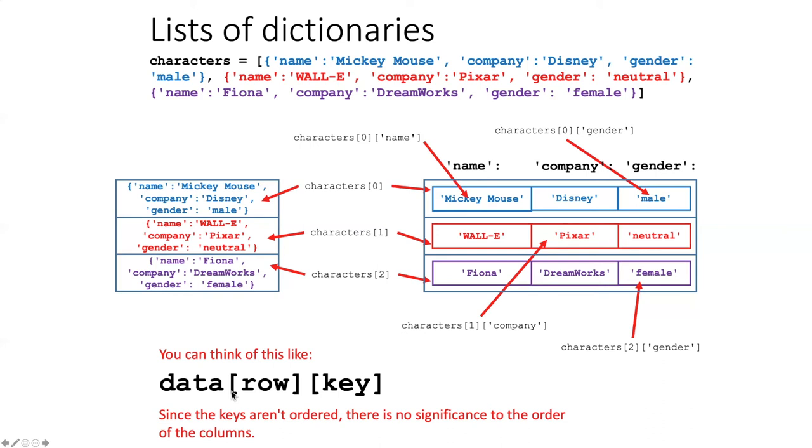So you can think of this as being a data structure where the first item is the row number and the second item is the key.